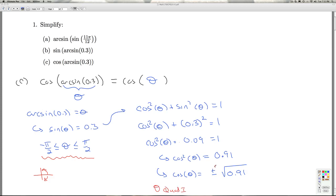So, in that case, I'm going to select the positive square root. Right? So, for my final answer, the cosine of the arcsine of 0.3 is the cosine of theta, which is the positive square root of 0.91. That'll do it for part C.